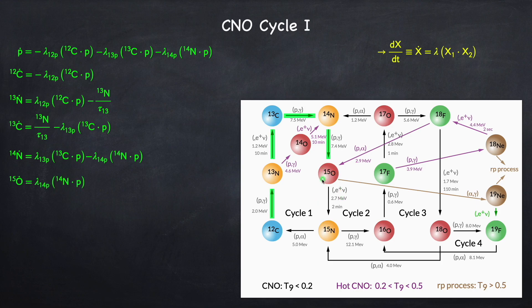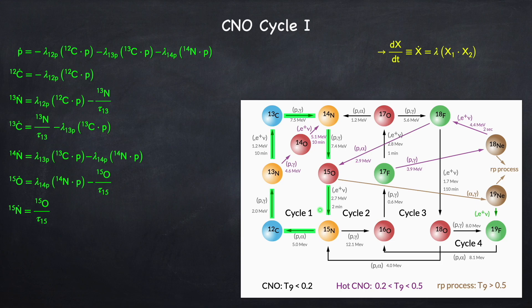Now we have another beta decay, and this is going to convert oxygen-15 into nitrogen-15. First thing is we destroy oxygen-15, and because this is a beta decay we're just taking the rate to be the amount of oxygen-15 divided by the average decay time. At the same rate we're going to create nitrogen-15. The final step is nitrogen-15 is going to capture a proton, converting it to carbon-12 and emitting an alpha particle — a helium nucleus. So we can write down the destruction of nitrogen-15, the destruction of a proton, the creation of carbon-12, and the creation of an alpha particle, otherwise called helium-4. And that's it — now the process repeats.